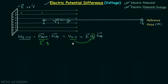The electric potential energy depends on the charge we are moving in the electric field — if we change the charge, the potential energy changes. On the other hand, electric potential is equal to the work done per unit charge in moving a charge from the reference point to any specific point in the electric field. Since work done is stored as potential energy, electric potential also equals electric potential energy per unit charge.